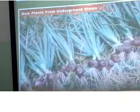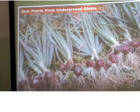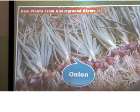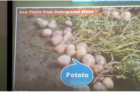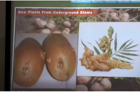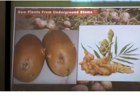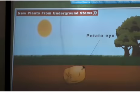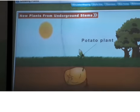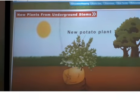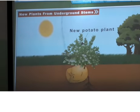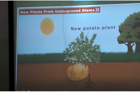New plants from underground stems. Underground stems like onion, ginger, and potato can grow into new plants. Potato and ginger have eyes on them. Each eye grows into a new plant under suitable conditions. Any piece of potato with an eye can grow into a new plant.